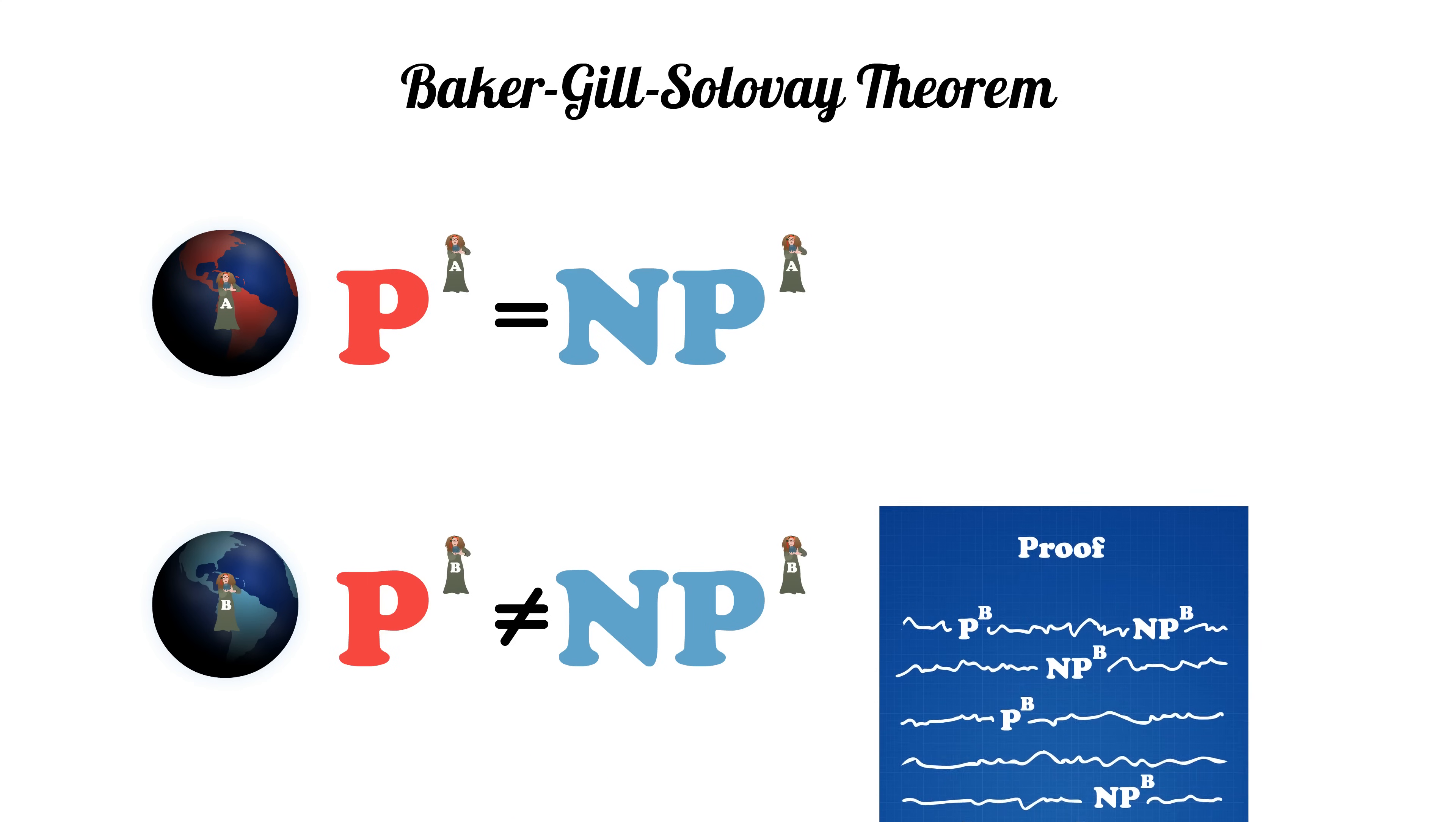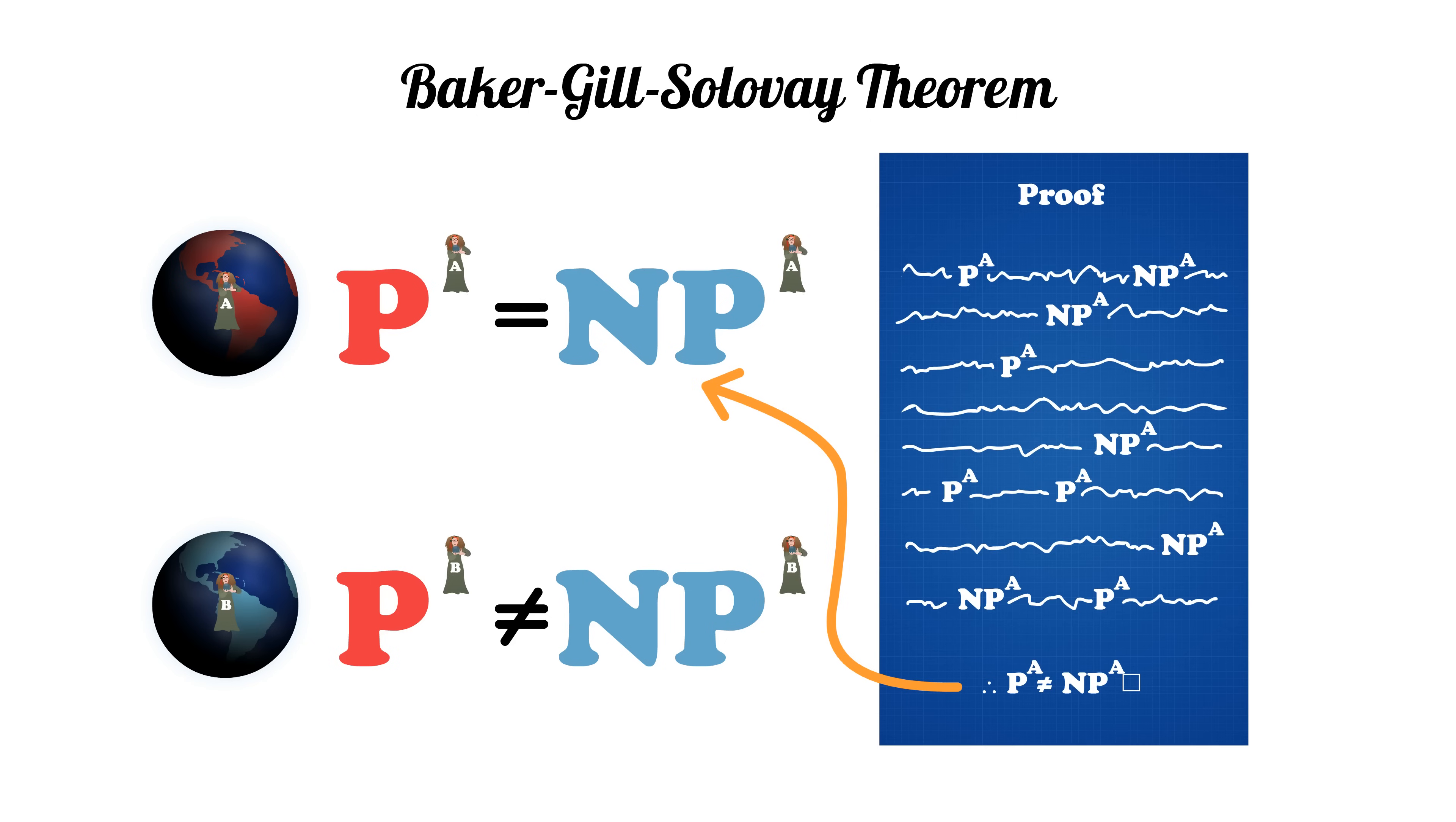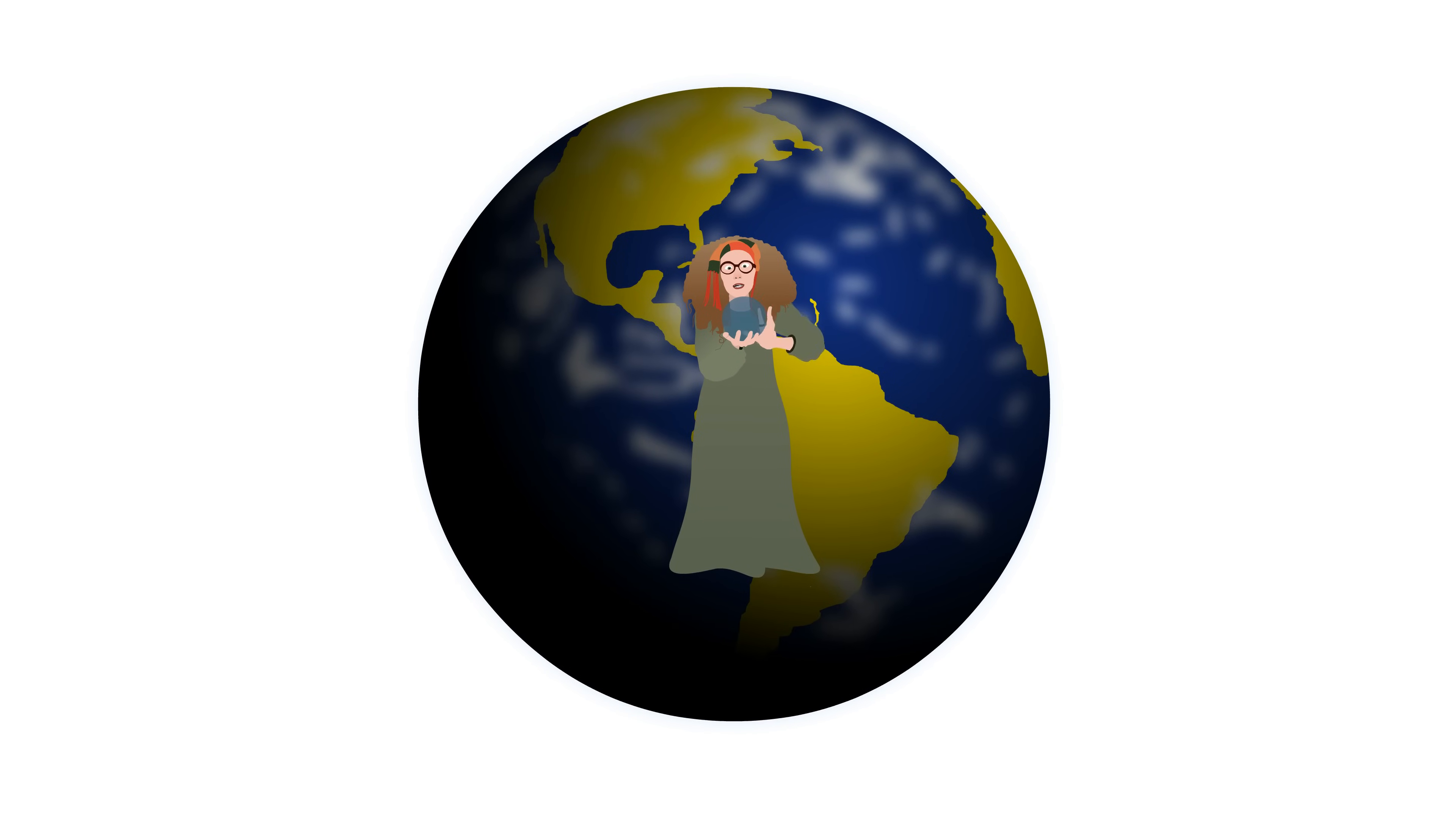We can do a similar thing to a proof that P does not equal NP. Any valid proof of P versus NP needs to be able to recognize whether or not it is in a pretend universe that contains an oracle.